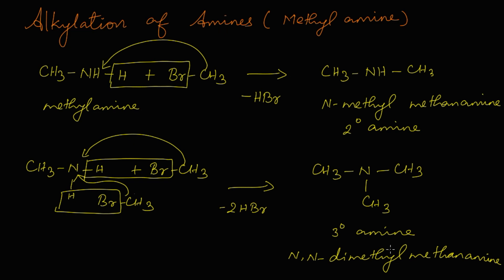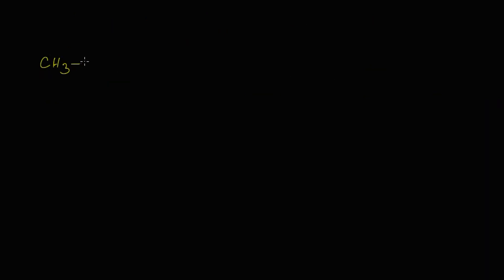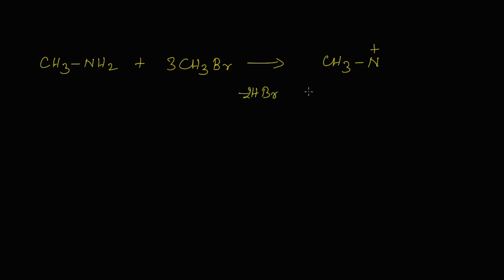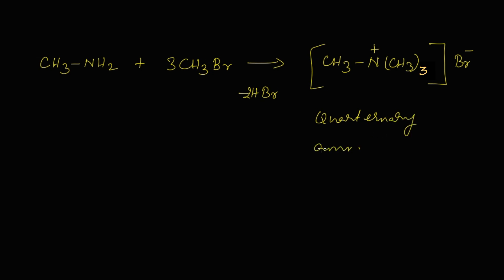Now let's prepare the quaternary ammonium salt. We react methylamine (methanamine) with three molecules of methyl bromide (bromomethane). The nitrogen carries a positive charge; two bromine and two hydrogen leave as two molecules of HBr. The three CH3 groups get attached to the nitrogen, and the bromide ion remains associated. The resulting compound is a quaternary ammonium salt.